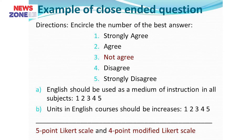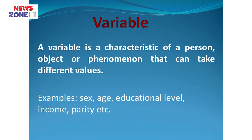Now let us discuss about variables. A variable is a characteristic of a person, object, or phenomenon that can take different values. For example, sex, age, educational status, income, and parity are probable variables against a person.